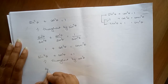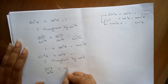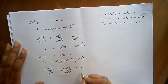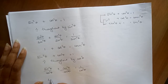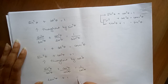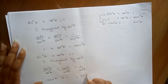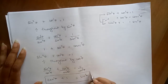Dividing throughout by cos²θ gives us sin²θ/cos²θ + cos²θ/cos²θ = 1/cos²θ. sin²θ/cos²θ gives us tan²θ, cos²θ/cos²θ gives us 1, and 1/cos²θ gives us sec²θ. So we get tan²θ + 1 = sec²θ, which is our third identity.